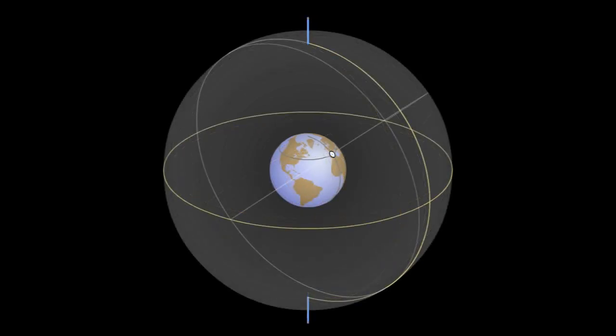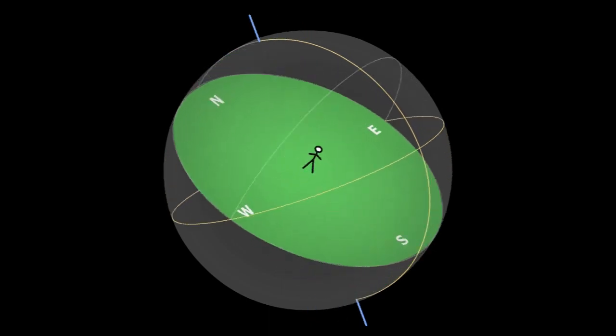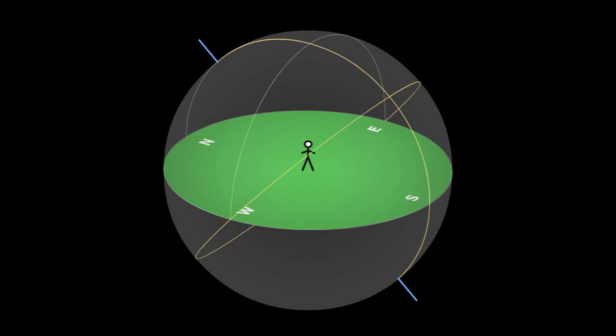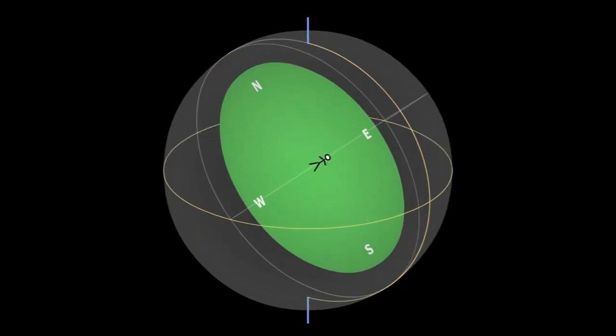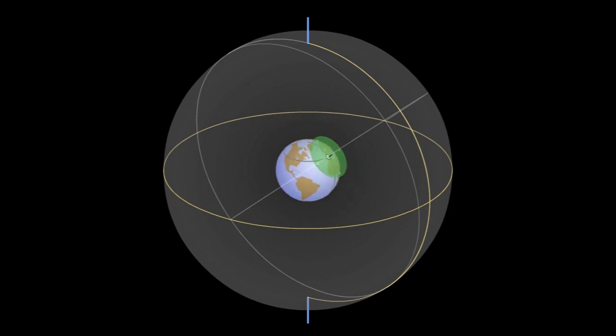In the next video, we will be talking of the motions of the stars on this very celestial sphere and we will be shifting to a new view called the local horizon view as shown. Until then, enjoy the animation. Goodbye.